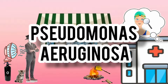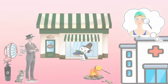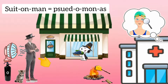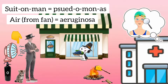Today's topic is Pseudomonas aeruginosa. The first thing to see here is a suit on a man, which reminds us of Pseudomonas. He is always in need of air from this fan, telling us that this is about Pseudomonas aeruginosa.